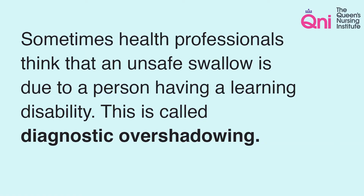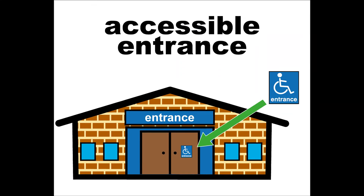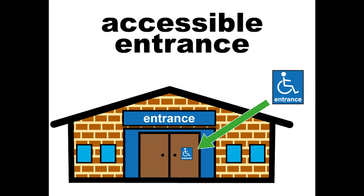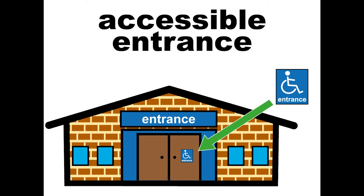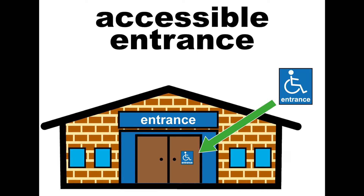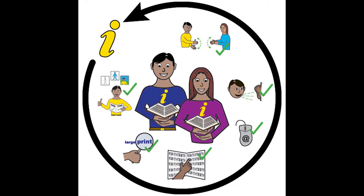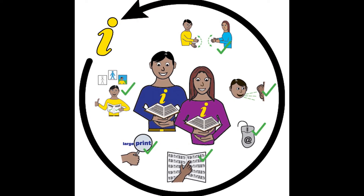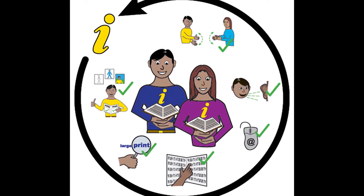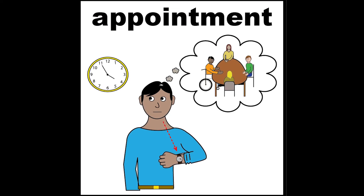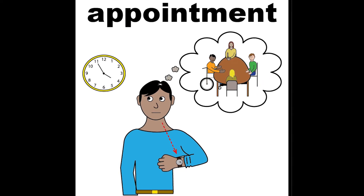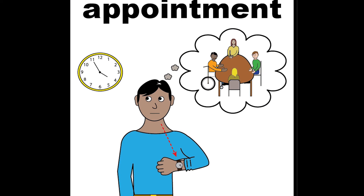Sometimes health professionals think that an unsafe swallow is due to a person having a learning disability. This is called diagnostic overshadowing. Some people with learning disabilities have difficulties accessing health services and appointments. This may be due to physical barriers such as buildings which are not designed for people who use wheelchairs, or it can be due to information not being provided in a way a person with a learning disability will understand. Sometimes people we support need reasonable adjustments to enable them to get the most out of health services and to attend health appointments. Without this, signs the person has an unsafe swallow can be missed.